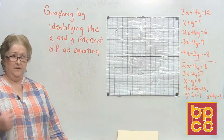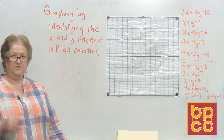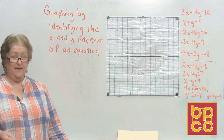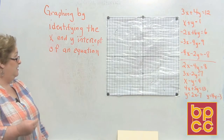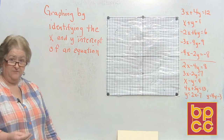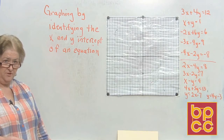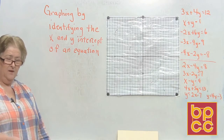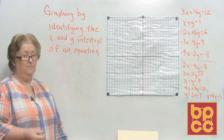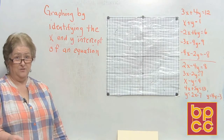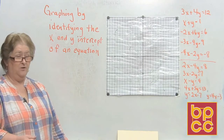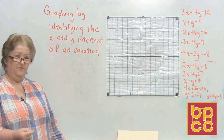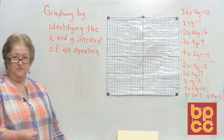So far we have graphed in slope-intercept, taken standard form and turned it into slope-intercept, and graphed horizontal and vertical lines. Now we're going to graph by identifying the x and y-intercept of an equation. We're not going to set up in slope-intercept — we're going to find where the line crosses the x and where it crosses the y. This is a good method, but it has some limitations because sometimes the numbers will be fractions and we can't graph fractions on our grid, so slope-intercept is a good backup.